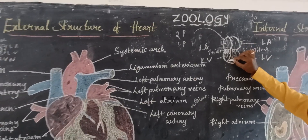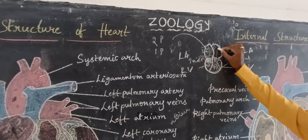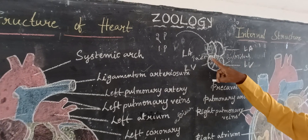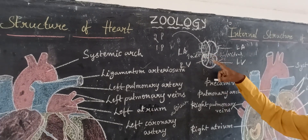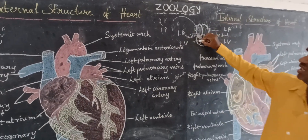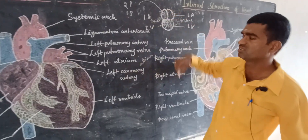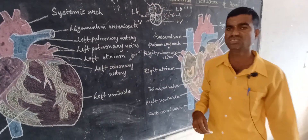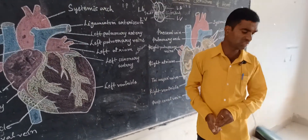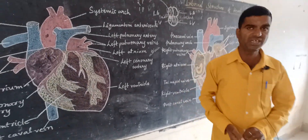The blood is now reaching into the ventricles. From the atria, through the tricuspid and bicuspid valves, the blood is reaching here. The blood is not going back because tricuspid and bicuspid valves prevent backflow.